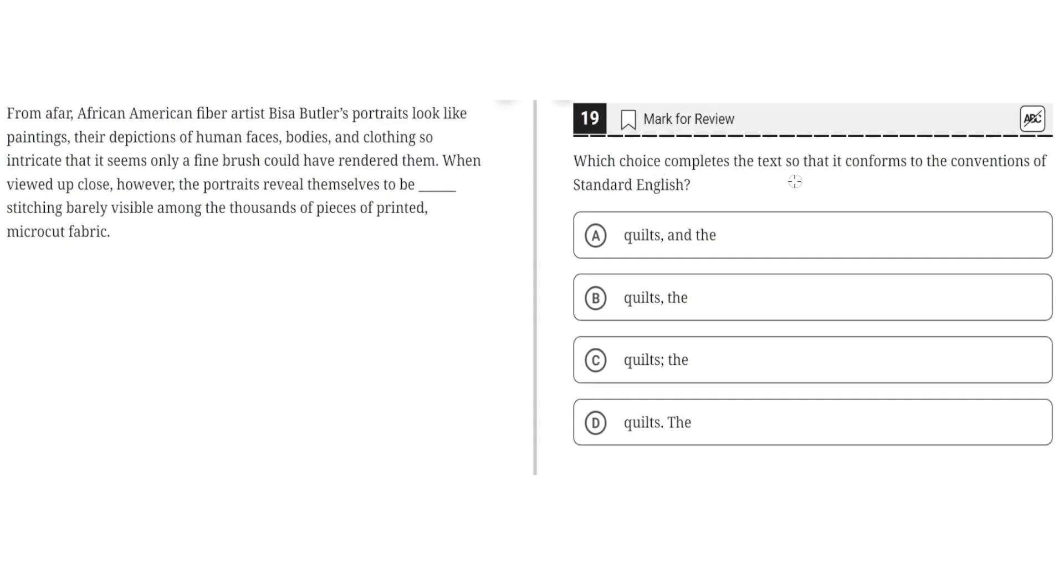Which choice completes the text so that it conforms to the conventions of standard English? From afar, African-American fiber artist Bisa Butler's portraits look like paintings, their depictions of human faces, bodies, and clothing so intricate that it seems only a fine brush could have rendered them. When viewed up close, however, the portraits revealed themselves to be blank, stitching very barely visible among the thousands of pieces of printed microcut fabric.